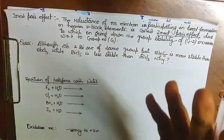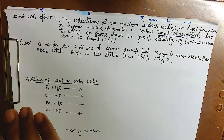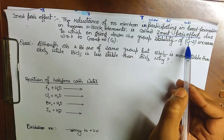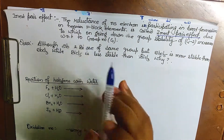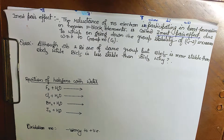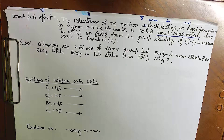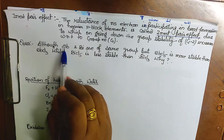For p-block elements, the group number is found by adding 10 to the valence electrons. The stability of the (group number minus 2) oxidation state increases going down the group. For example, in the 14th group, the +2 state becomes more stable than the +4 state as we go down.